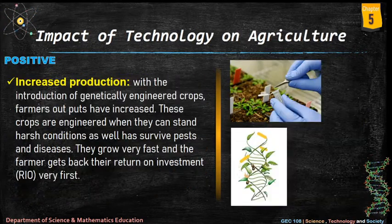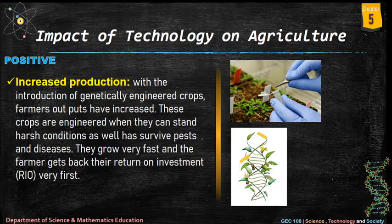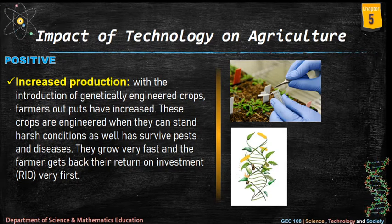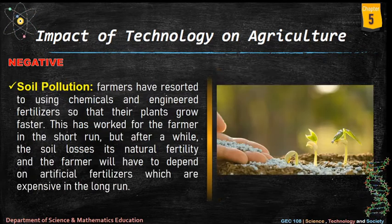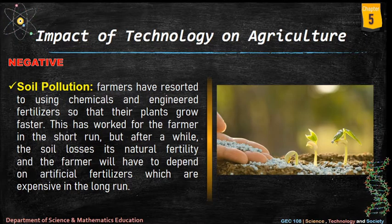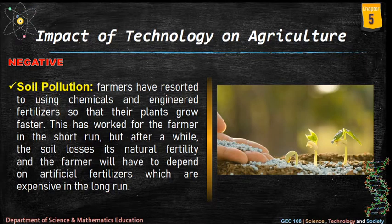Impact of technology on agriculture — positive impact: with the introduction of genetically engineered crops, farmers' outputs have increased. These crops are engineered to withstand harsh conditions, survive pests and diseases, and grow very fast, allowing farmers to get a return on investment quickly. Negative impact — soil pollution: farmers have resorted to using chemicals and engineered fertilizers to make plants grow faster. This works in the short run, but after a while the soil loses its natural fertility and the farmer becomes dependent on expensive artificial fertilizers in the long run.